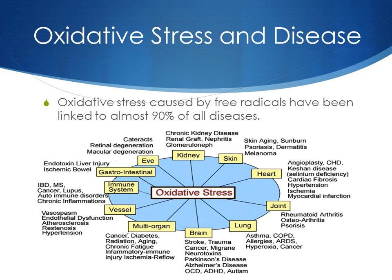Oxidative stress has been linked to almost 90% of all diseases. You can see in this depiction here a lot of different diseases. If you want to look up something in more detail about how a certain disease is linked to oxidative stress, you can write, for example, 'stroke and oxidative stress' or 'asthma and oxidative stress,' and you'll see tons of research data available. The scientific community knows that oxidative stress due to free radicals are the cause of most diseases, and more and more people are learning about that.